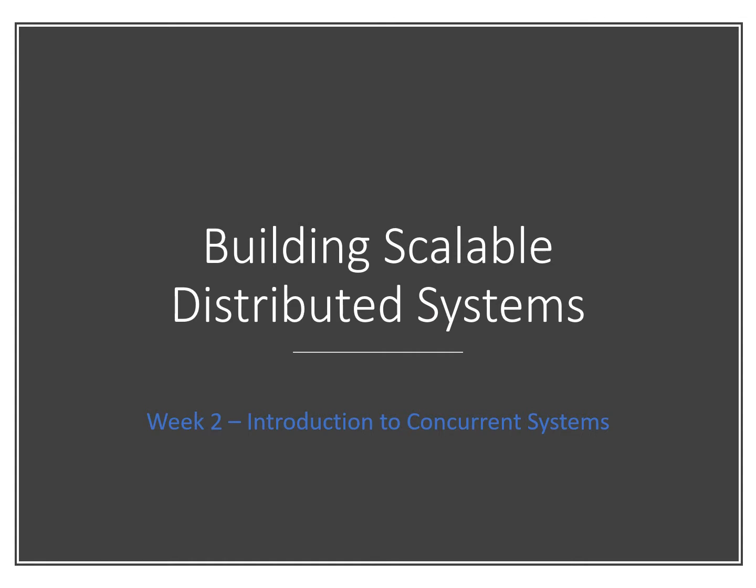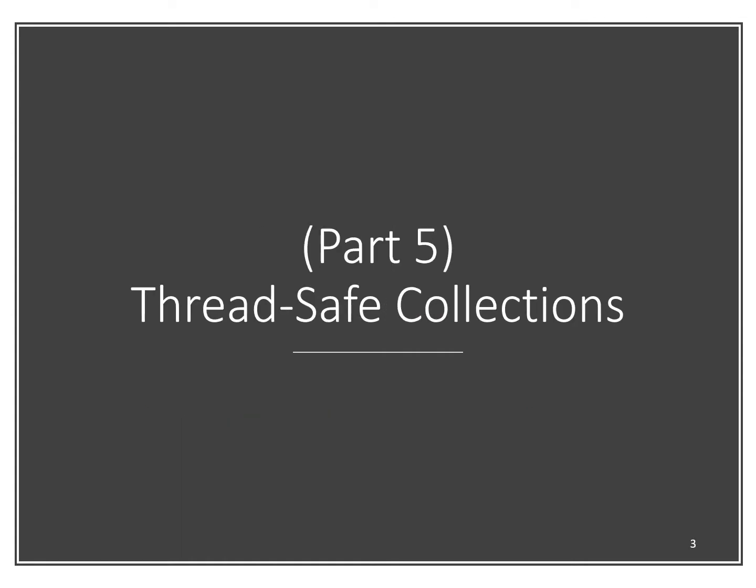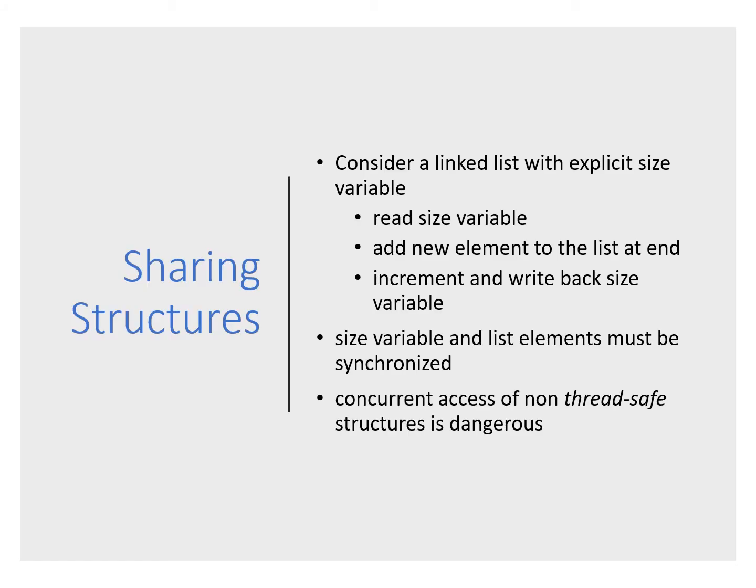Let's wrap up week two with part five of the materials, covering issues around thread-safe collections available in the Java collections package. Consider two threads sharing a linked list that has an explicit size value. Both threads try to add an element at the same time — they read the size, one adds an element and writes the new size back, then the other adds its element and overwrites the previously written size. This is a classic race condition.